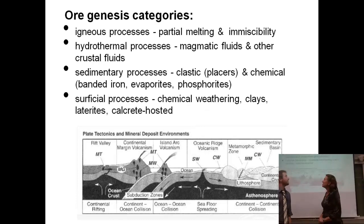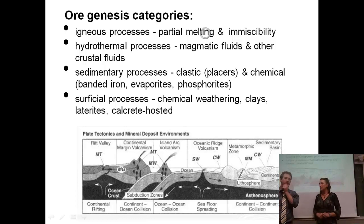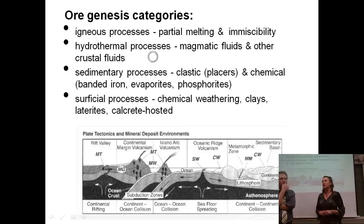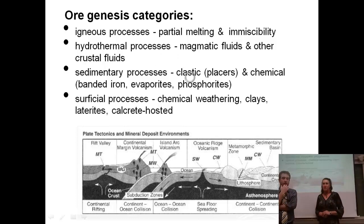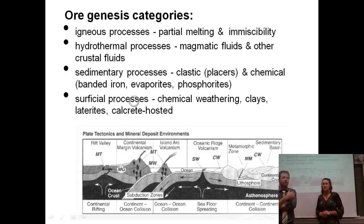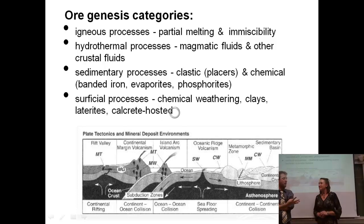We're going to talk about several different things. We'll talk about igneous processes, specifically partial melting and immiscibility. We're going to talk about hydrothermal processes, where hot water is involved, magmatic fluids, and other crustal fluids. The other two are sedimentary processes — basically making different elements settle from certain solutions — and then surficial processes: weathering of chemicals, clays, and some soils. Those are the four types we'll be talking about.